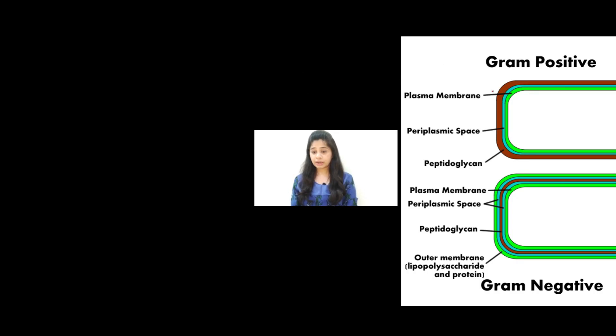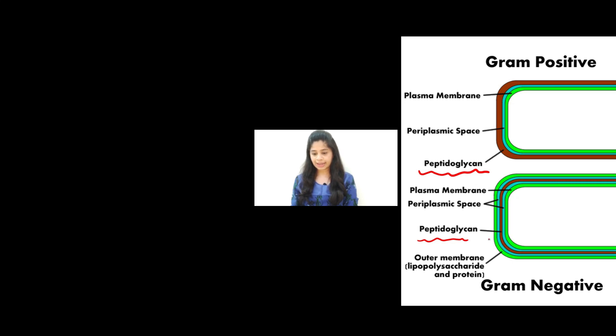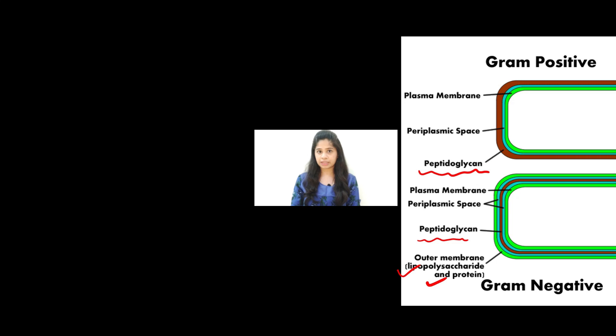Based on cell wall characteristics, bacteria can be classified into gram positive and gram negative. In gram positive bacteria there is a thick layer of peptidoglycan, whereas in gram negative bacteria the peptidoglycan layer is quite thin. In gram negative bacteria, the thin peptidoglycan layer is further covered by an outer layer of lipopolysaccharides and proteins.